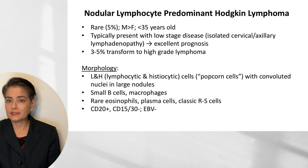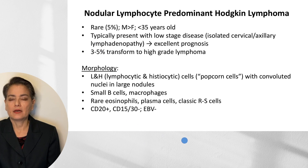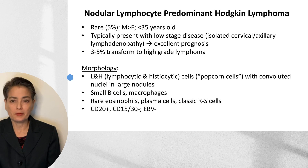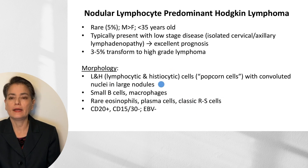Nodular lymphocyte-predominant Hodgkin lymphoma is not classic — we recognize this because it does not have CD15-positive, CD30-positive neoplastic cells. A few Reed-Sternberg cells may be present, but the key cells here are the lymphocytic and histiocytic cells, referred to as LNH cells or popcorn cells, because of their very convoluted nuclei.